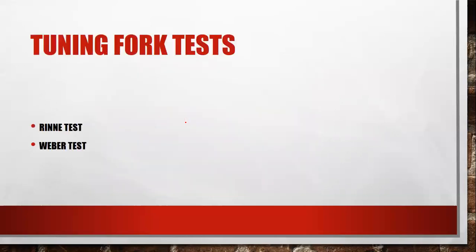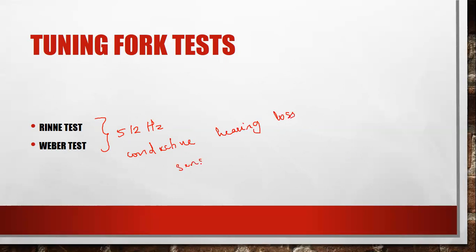Next is tuning fork tests. The two important types include the Rinne test and the Weber test. These two tests mainly use a frequency of 512 hertz and are primarily for assessing conductive hearing loss and sensorineural hearing loss.